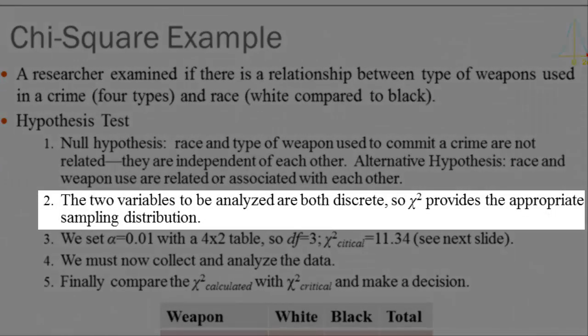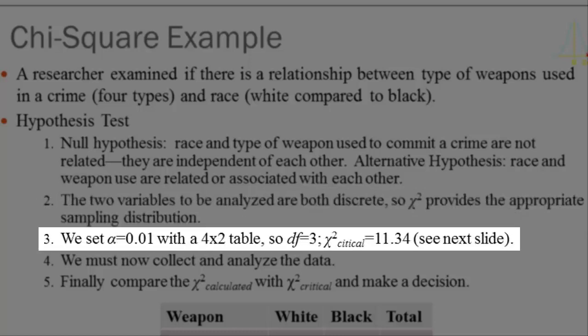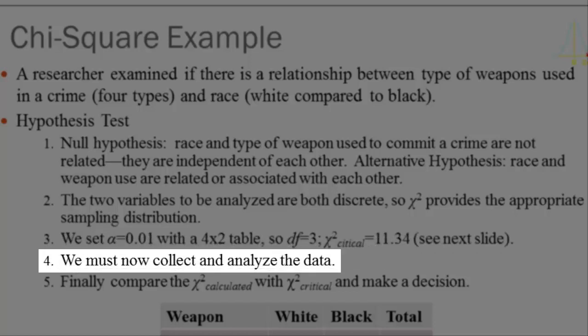For step two in hypothesis testing, since both variables are discrete we're going to use the chi-square sampling distribution. Step three: how much evidence do we need to reject the null hypothesis? I'm going to set alpha equal to 0.01. I have a four-by-two table so I have three degrees of freedom. Going to the table in the back of the book, I can see that chi-square critical is 11.34. Step four: we have to go out and collect data, analyze them, and produce our chi-square statistic.